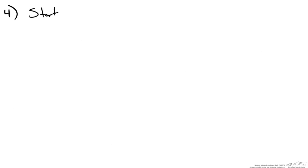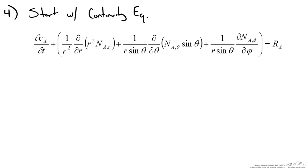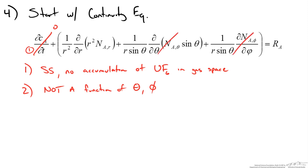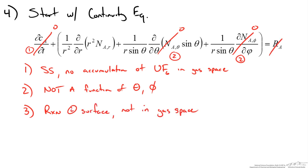We start mass transfer problems with the continuity equation in spherical coordinates. We apply our assumptions to simplify it. Steady state means no accumulation of uranium hexafluoride in the gas space, so the time-derivative term goes to zero. The flux is not a function of theta or phi, so those terms drop out. There is a reaction at the surface but not in the gas film, so the reaction term is also zero.